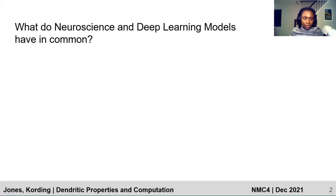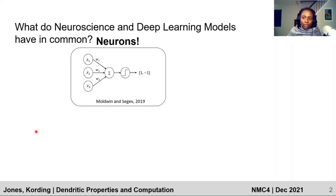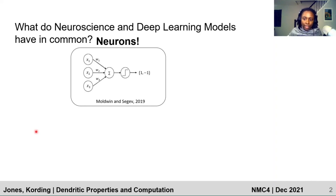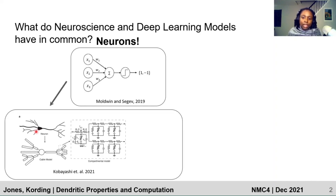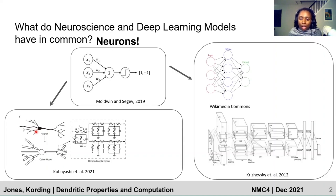So what do neuroscience and deep learning models have in common? Neurons. Historically, the first mathematical models of neurons were linear weighted sums mapped through a threshold non-linearity. Neuron modeling has since moved toward more empirically detailed models of single neurons, while deep learning has moved toward complex neural network architectures while keeping the abstracted point neural model largely the same.